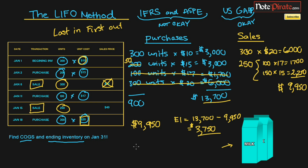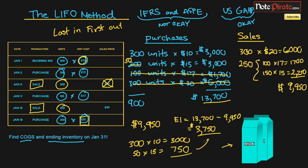We can also verify this another way by multiplying what's left: 300 units times $10 equals $3,000, and 50 units times $15 equals $750, giving us $3,750. That confirms our ending inventory. So we have our cost of goods sold and ending inventory calculated using the LIFO method.